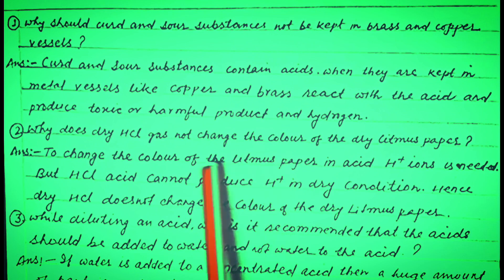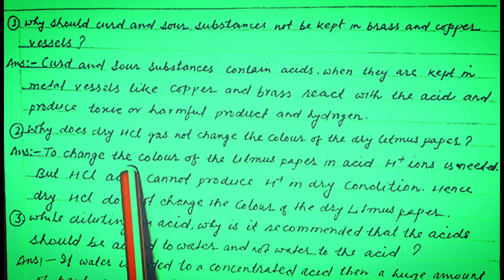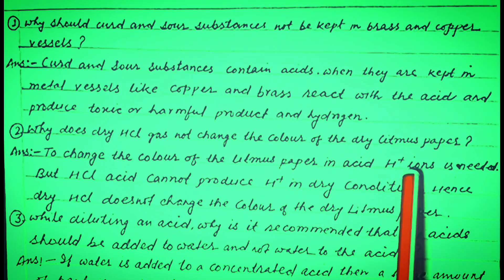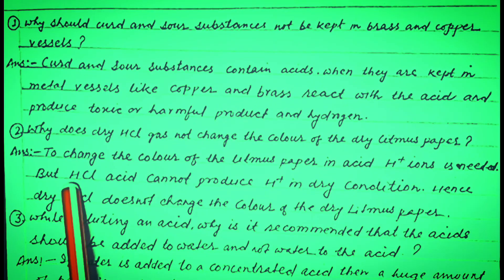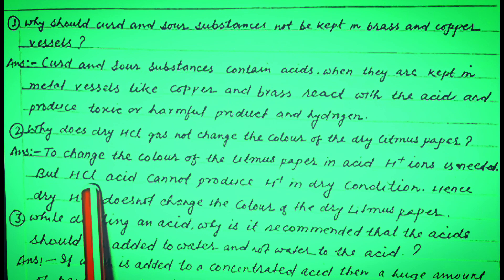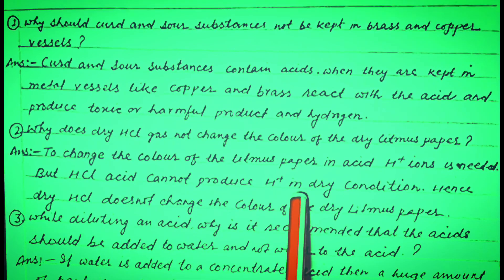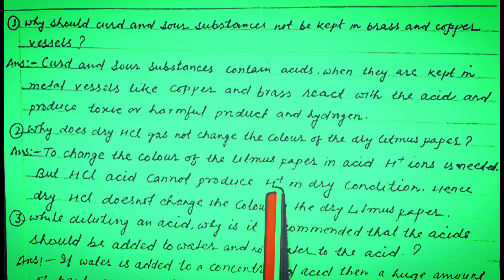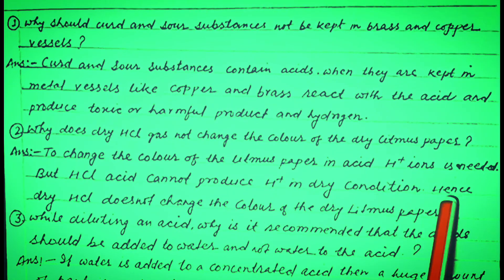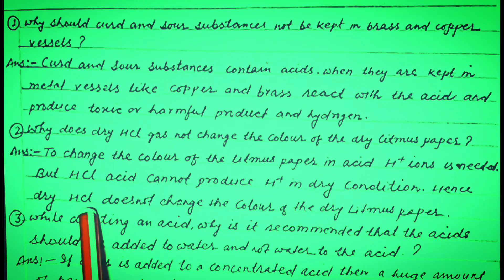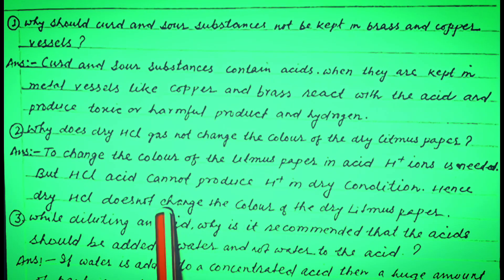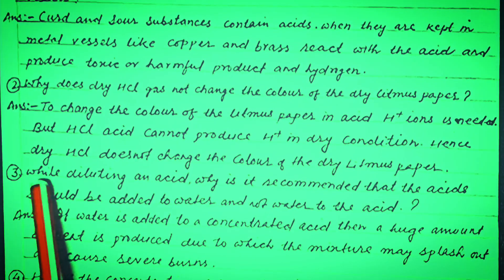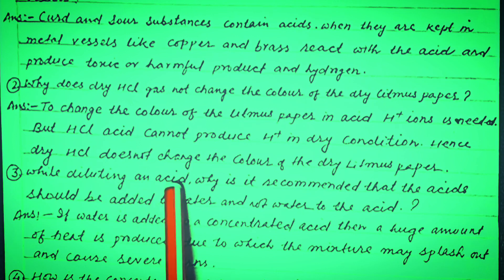Litmus paper के color को change करने के लिए acid में H⁺ ions चाहिए, लेकिन HCl जो है dry condition में H⁺ ions नहीं बना सकता, इसलिए dry HCl, dry litmus paper के color को change नहीं कर सकता। (To change the color of litmus paper, H⁺ ions are needed; since HCl cannot produce H⁺ ions in dry condition, dry HCl cannot change the color of dry litmus paper.)